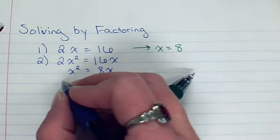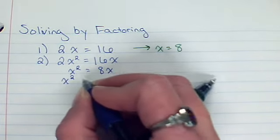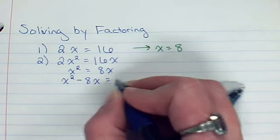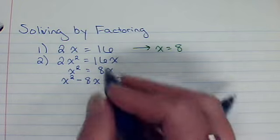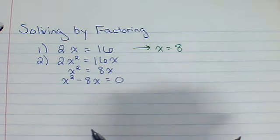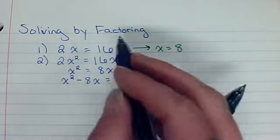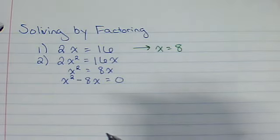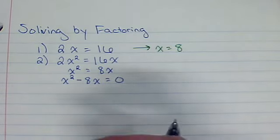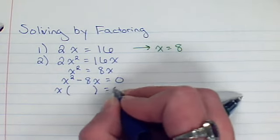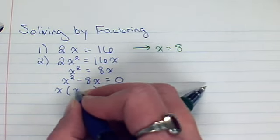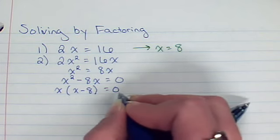So what we can do is get them on both sides together. So subtract the 8x and get them on both sides. Now, hence the title, Solving by Factoring. Let's see if they have anything in common. Well, they did have that x in common, so what if I factor it out or undistribute it there. I would have x times x minus 8 equals 0.